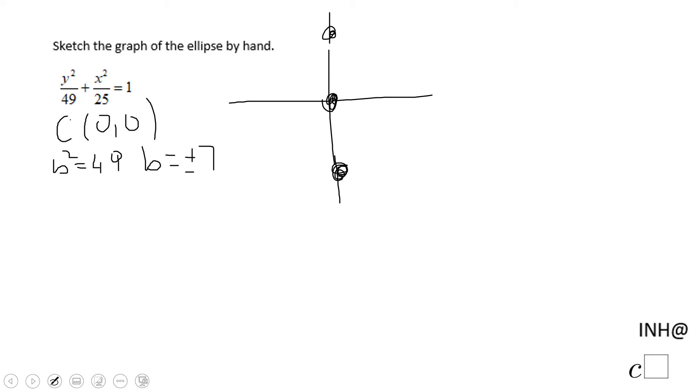And these are two vertices of this ellipse. Similarly, I'm going to do a squared. A squared is 25, so a will be plus and minus 5.